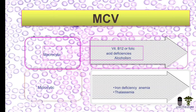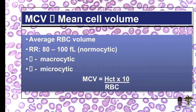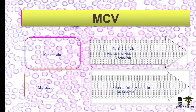The term anemia is used because along with the decrement below the reference range of 80 to 100, the HB also decreases. The causes of macrocytic anemia are vitamin B12 or folic acid deficiency and alcohol consumption. The causes of microcytic anemia or low MCV are iron deficiency anemia and thalassemia, which can be differentiated on the basis of different parameters.